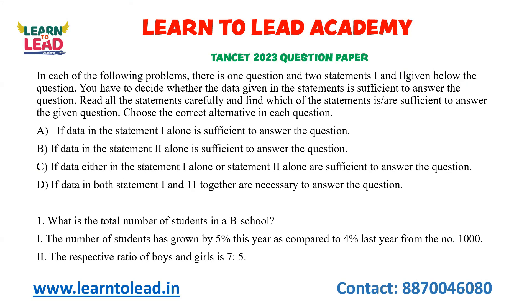For a data sufficiency question, based on two statements, you will have 4 options to choose from. Option A: Statement 1 alone is sufficient to answer the question. Option B: Statement 2 alone is sufficient. Option C: Either Statement 1 alone or Statement 2 alone is sufficient. Option D: Both statements together are necessary to answer the question.